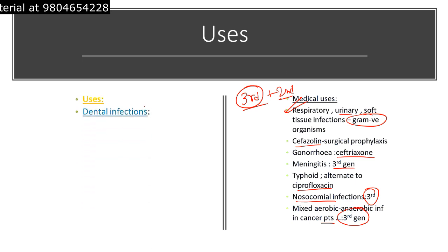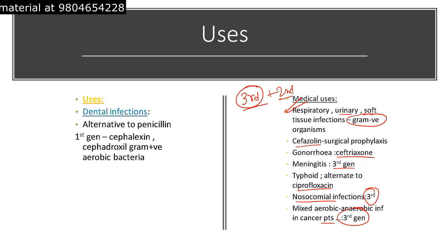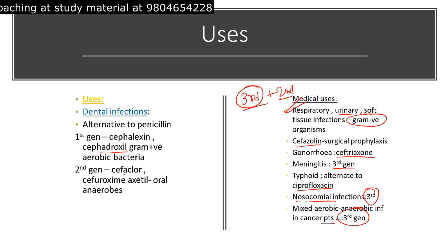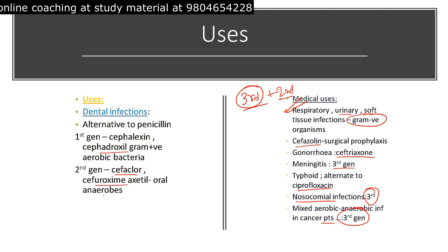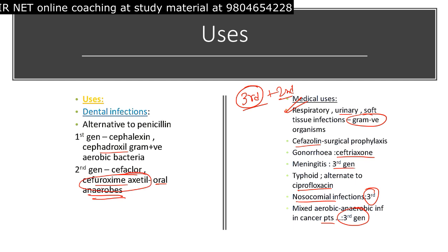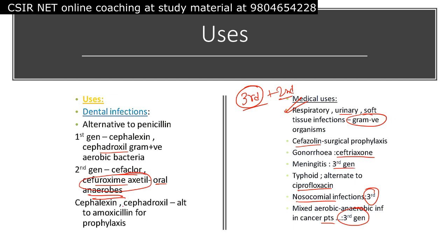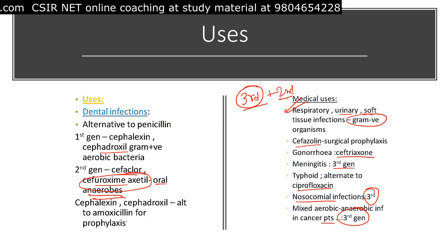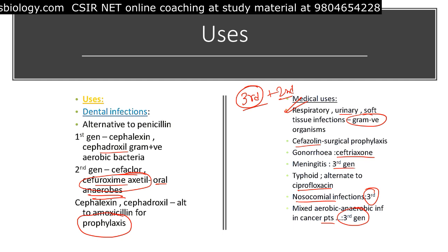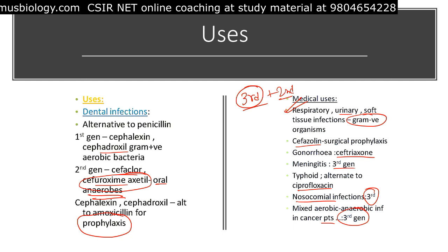For dental uses, first generation cephalosporins — cephalexin and cefadroxil — are used as an alternative to penicillin against gram-positive aerobic bacteria. Second generation examples like cefaclor and cefuroxime axetil are used for oral anaerobic infections. Cephalexin and cefadroxil are also used for prophylaxis.